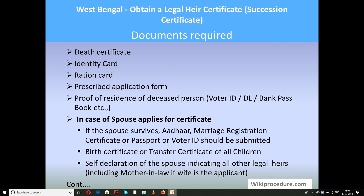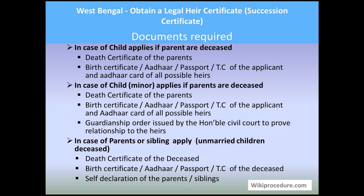Birth certificate or transfer certificate of the children and a self-declaration of the spouse indicating all other legal heirs including mother-in-law if the wife is the applicant. In case a child applies: death certificate of parents, birth certificate, passport, and TC of the applicant, and Aadhaar card of all possible heirs. In case a minor child applies with deceased parents: death certificate of parents, birth certificate, passport, TC of the applicant, Aadhaar card of all possible heirs, and a guardianship order issued by the Honorable Civil Court. In case parents or siblings apply for an unmarried deceased child: death certificate, birth certificate, passport, TC of the deceased, and self-declaration of the parents or siblings.